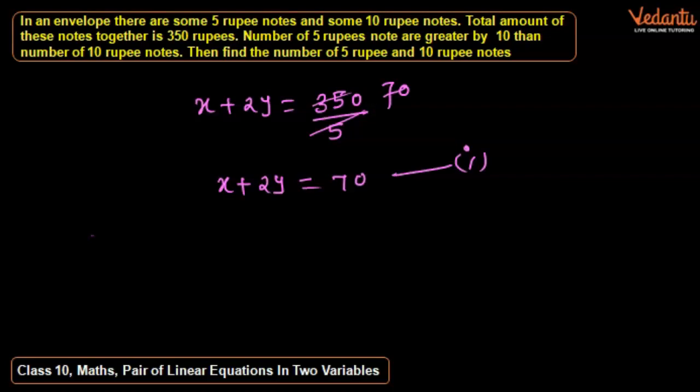According to condition two, the number of 5 rupee notes are greater by 10 than the number of 10 rupee notes. So x equals y plus 10. This is equation number two.